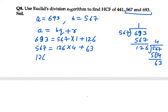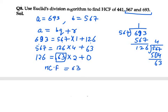Now A is 126 and B is 63. So 63 into 2 is 126, and the remainder is 0. The HCF of these two numbers is 63.